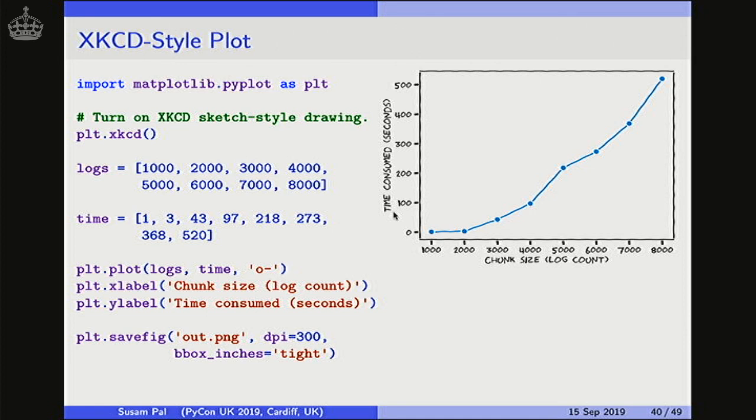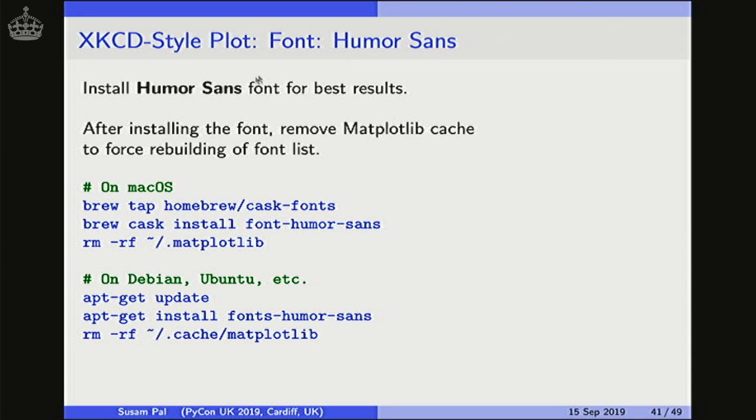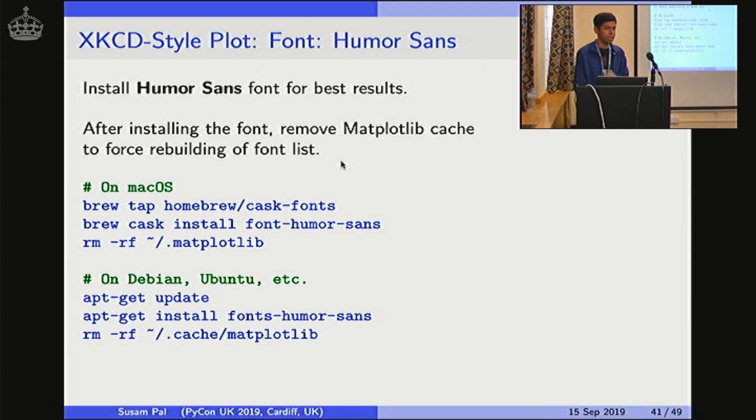This font here is called the Humor Sans font. If it is installed on your system, it will be automatically picked up for any XKCD style plotting. This is recommended by the Matplotlib documentation itself. So this is the Humor Sans font. One little trick to be aware of though, once you install the font, you have to remove any Matplotlib cache directory that might be present in your home directory. So I've got the commands here for both MacOS and Linux based systems. That is because only if you remove the cache, it will be forced to rebuild the cache when it runs the next time. And rebuild the font list and find this new font that is on your system.